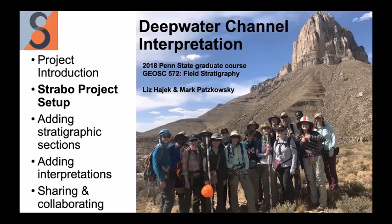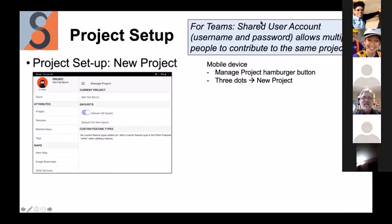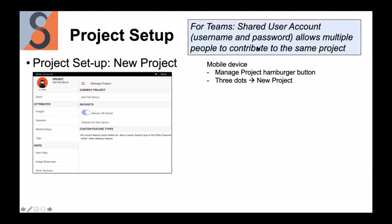For setting up this type of project in StraboSpot — whether for a class or a research group — a key workflow note: for teams, use a shared user account with a common username and password loaded on all devices. This allows multiple people to contribute to the same project. If everyone has individual accounts, sharing data is possible but aggregating into one project for visualization is difficult. At present, one shared user account is the recommended approach.